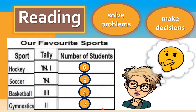One more question about this tally graph before I go. Do the students in the class like soccer or basketball better? If you said soccer, you are correct. We know that students like soccer more than basketball because five students like soccer and four students like basketball. Five is greater than four, so more students like soccer than they do basketball.